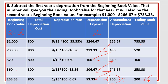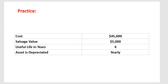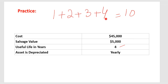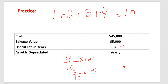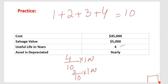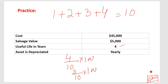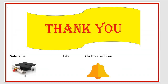For practice, here is a question: the value of your asset is $45,000, the salvage value is $5,000, and the useful life is 4 years. The hint: 1 + 2 + 3 + 4 equals 10. The first year depreciation rate is 4 divided by 10 multiplied by 100, and so on. The total accumulated depreciation should be $40,000 (45,000 minus 5,000), and the last ending book value should be $5,000. Try it yourself for more practice. Please subscribe to the channel, like it, and click the bell icon. Thank you.